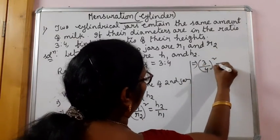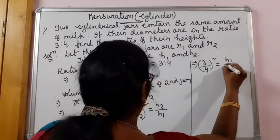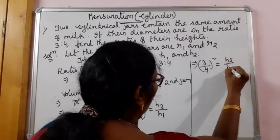3 by 4 whole square, is equal to H1, not H1, H2 by H1.